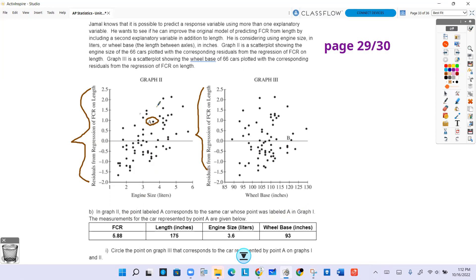So what you're going to look for is on this graph, which is wheelbase, we're looking for that same residual. At 93, which is somewhere over here, I want that same residual and it looks like right there. That's going to be my point.